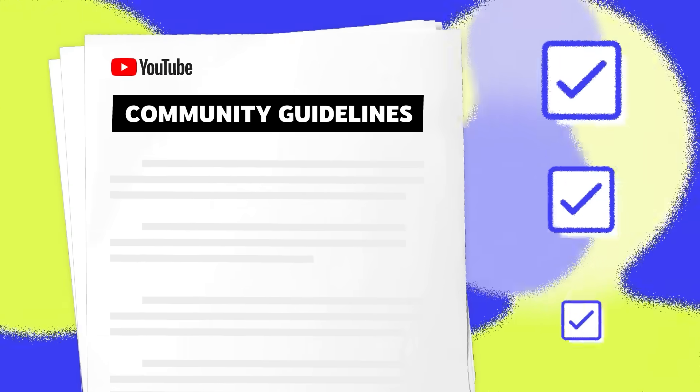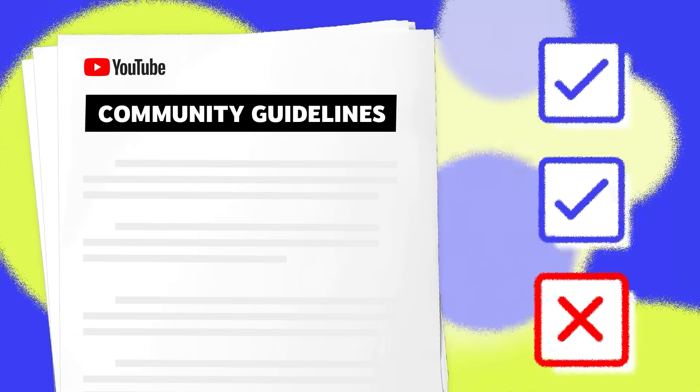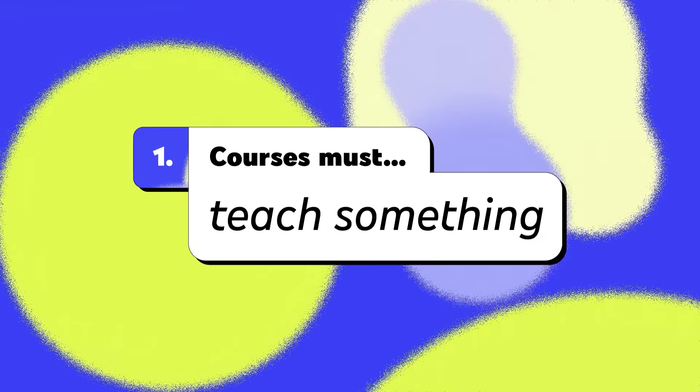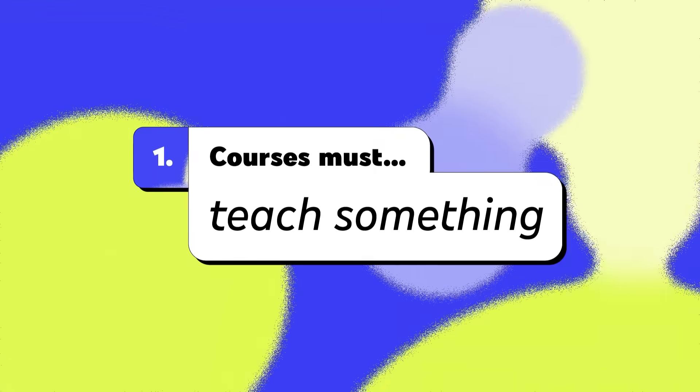All YouTube courses must follow our community guidelines and meet the following three requirements. If your course does not meet these requirements, YouTube may convert it into a standard playlist. First, courses must teach something — courses need to be educational in nature. The goal of the content should be to explain something, like a math equation, or show how to do something, like building a cabinet.